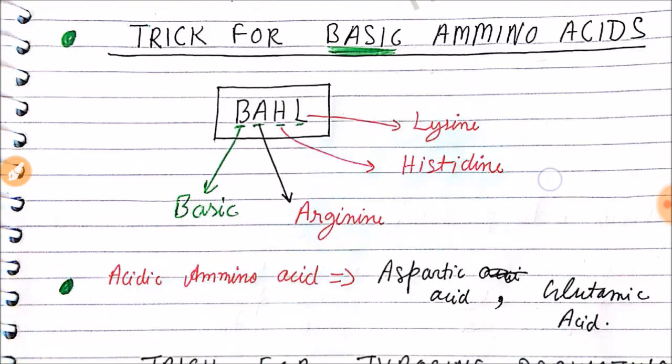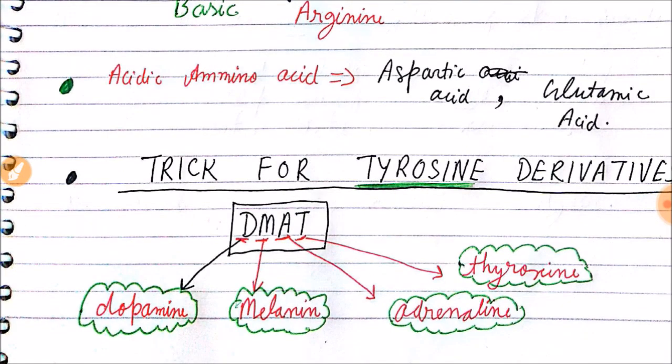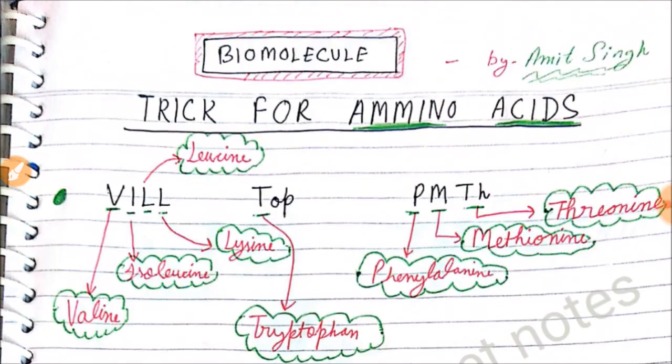So these are all the tricks you can follow to easily remember essential amino acids, basic amino acids, and tyrosine derivatives. These are very important for NEET/AIMS, as many questions have been asked on these topics previously. Thanks for watching.